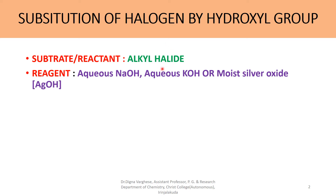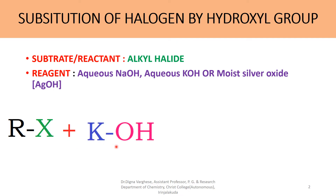When alkyl halide reacts with any one of these reagents, the hydroxyl group is substituted for the halide ion, forming alcohol. In the general representation, the alkyl part is R and X is the halide part. The halide group is replaced by the OH group — this is the substitution of halogen by hydroxyl group. This reaction occurs at high temperature, so we have to heat the medium.